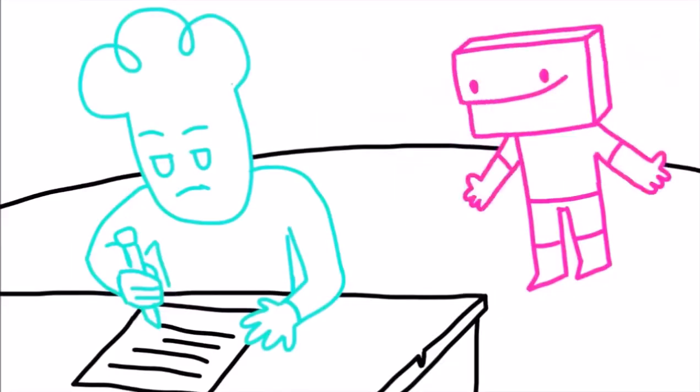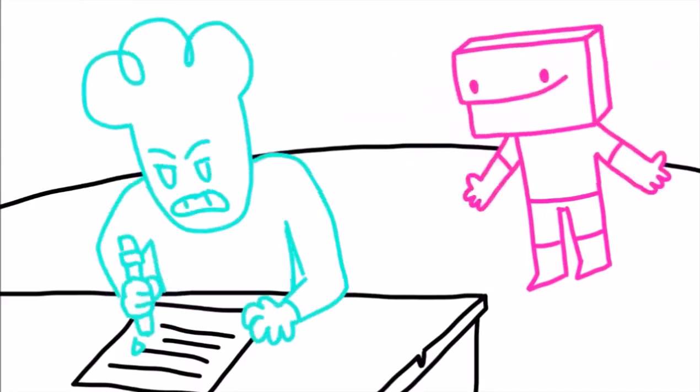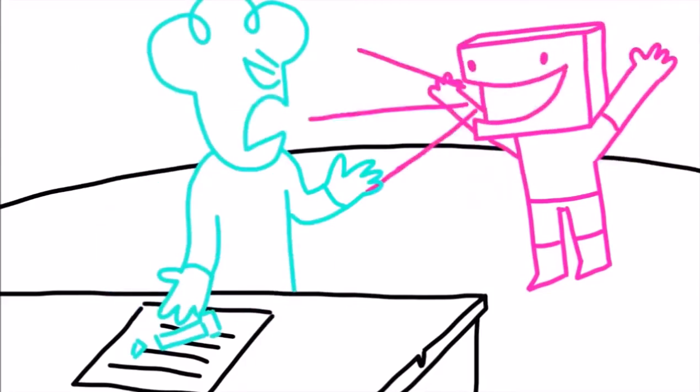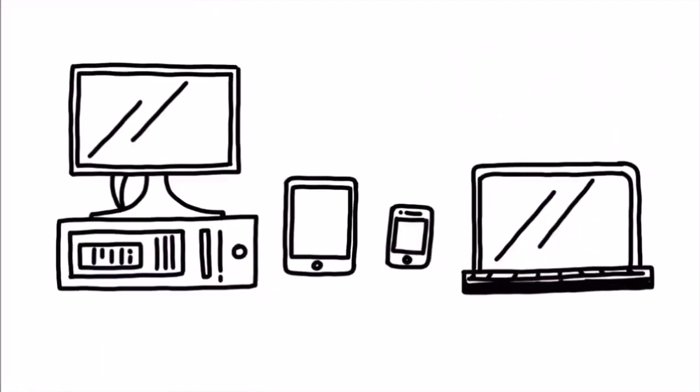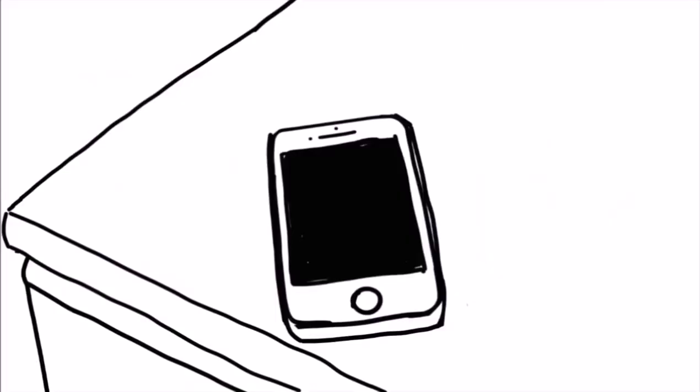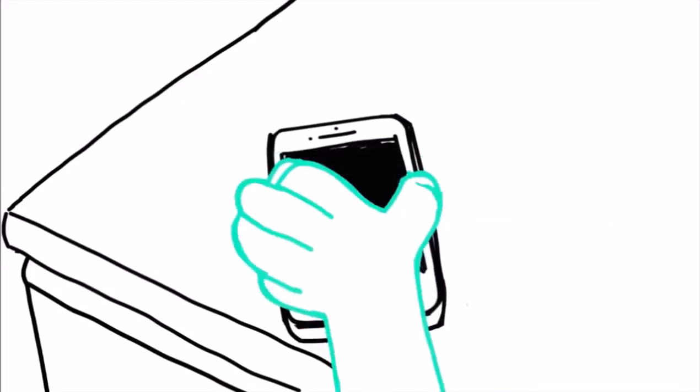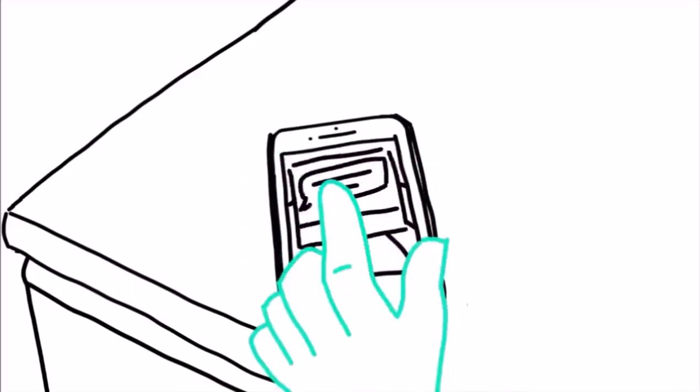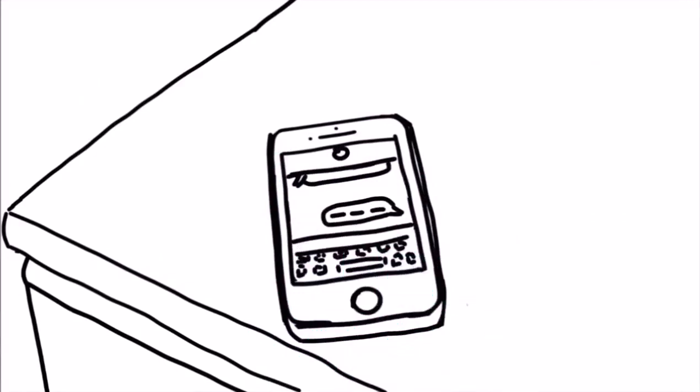8. The introvert only wants to communicate by text or email. There are introverts that avoid talking to someone they hate at all costs and get frustrated if they have to hear said person's voice. Thanks to the digital age, communication can be kept to email and texting. Say you call an introvert and leave a message. They'll respond to the message when they could have answered the phone, but they chose not to.